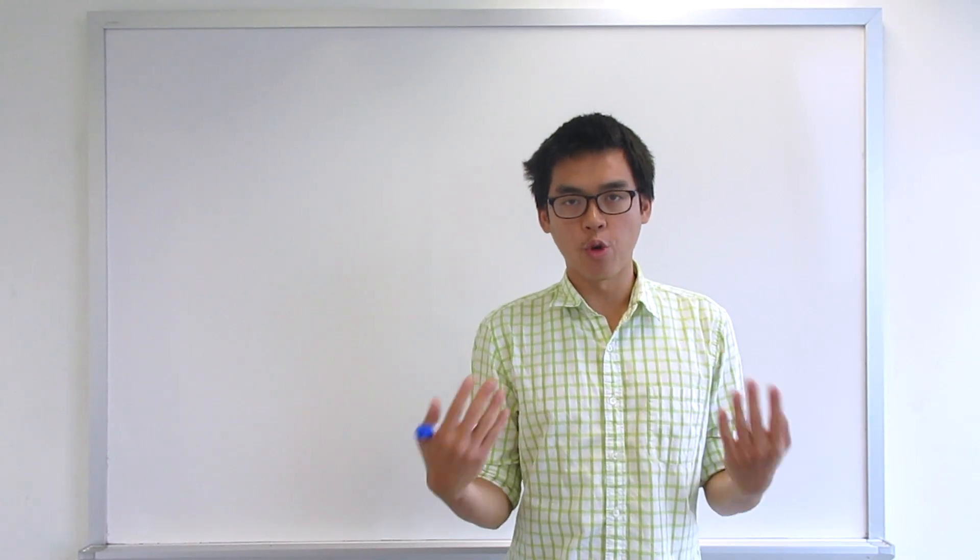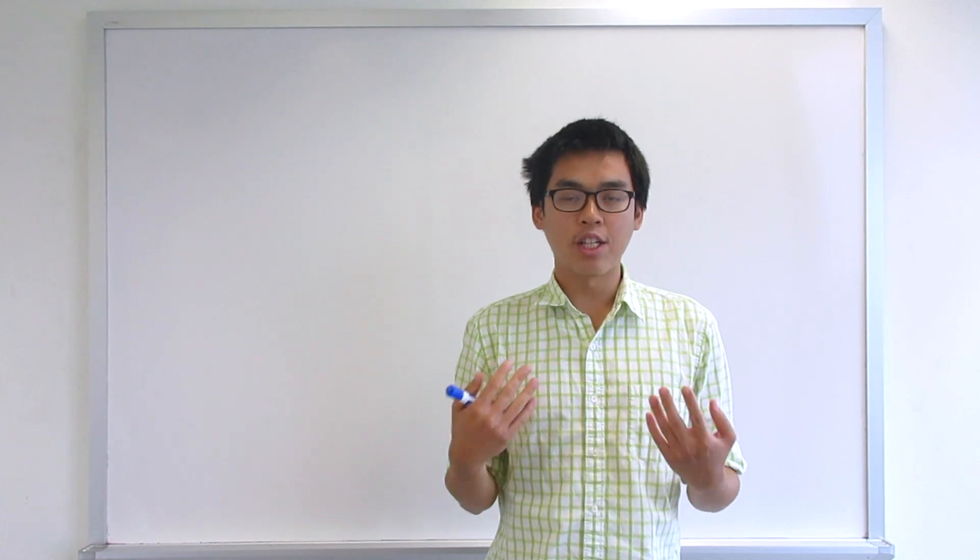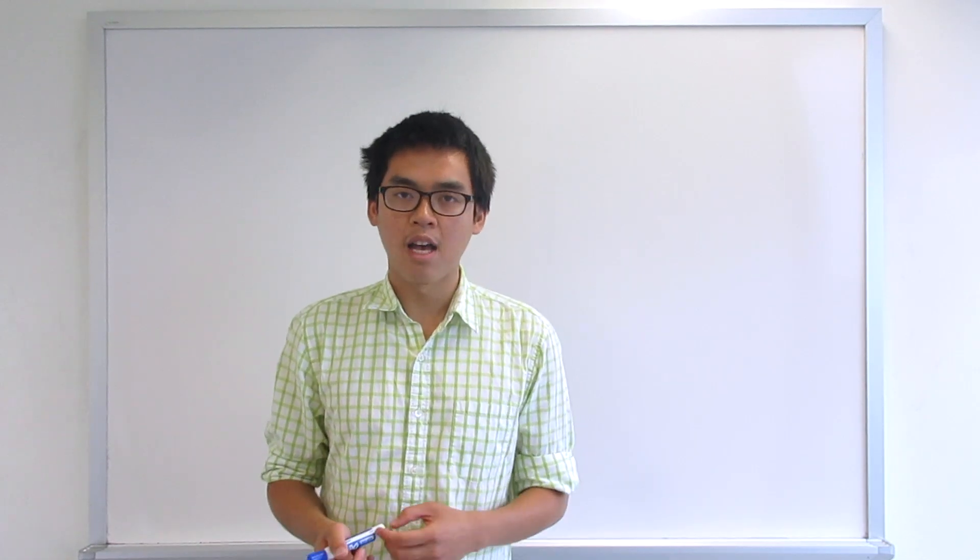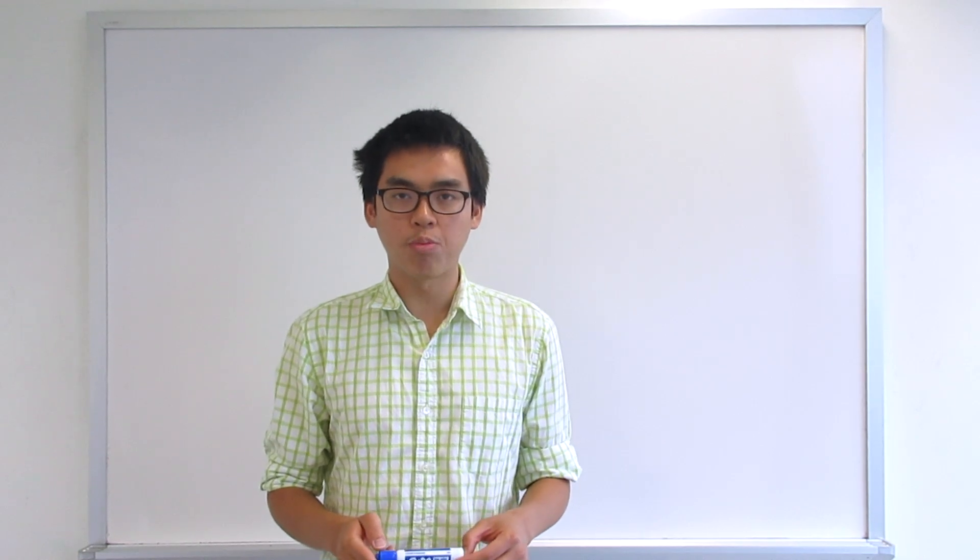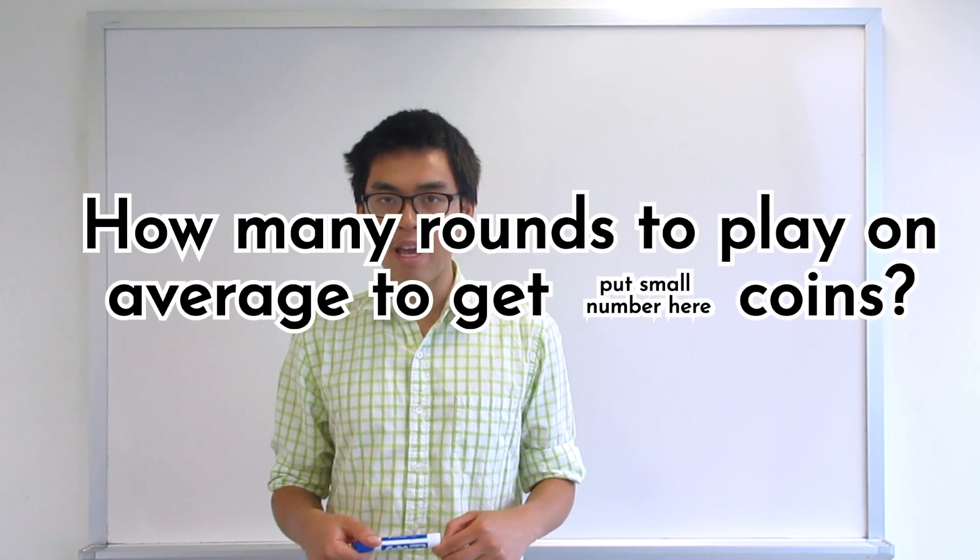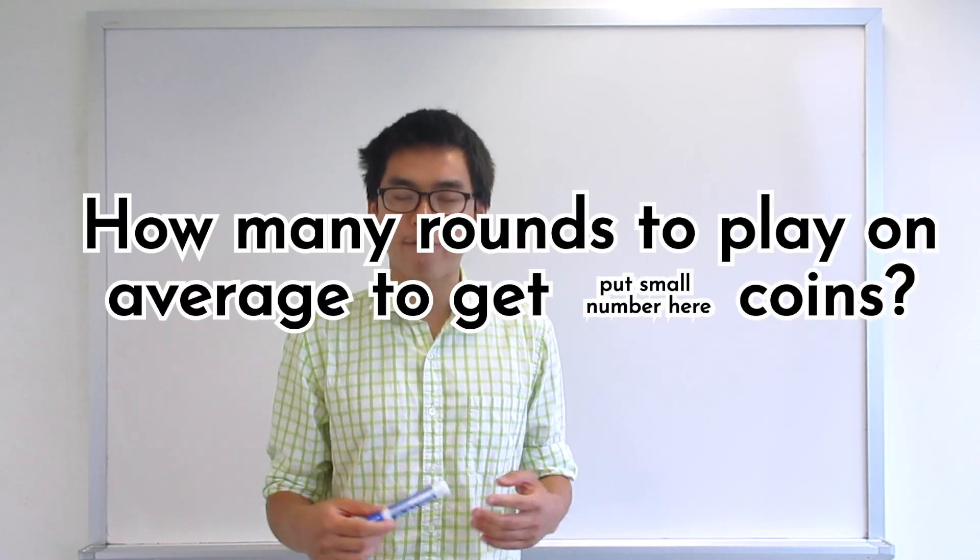Alright, now that we got simulation in our bag, then what do we do next? Well, we try to go small, which means we try to answer the same question but for the smaller case. So the original question asks how many rounds on average do we need to play in order to get 100 coins? So let's ask a similar question. How many rounds on average do we play until we get as few number of coins?